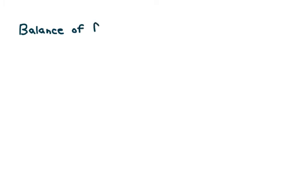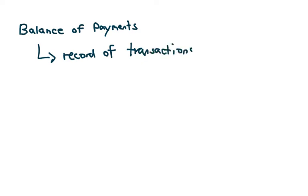Hey guys, it's Mr. Schmidt here. In this last video for AP Economics, we're going to look at something called the balance of payments. I thought we'd freeform it — no text this time, just you, me, and a blank board. So what is the balance of payments? It is a record of transactions between countries. Every time something is bought or sold between countries, it is recorded as a transaction in the balance of payments — a payment going from, say, the US to China or from China to the US.